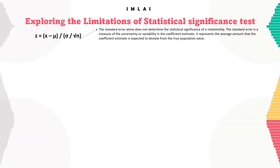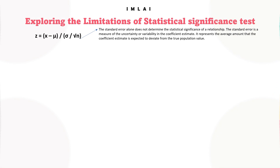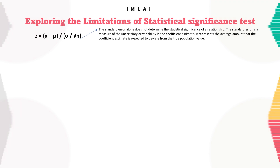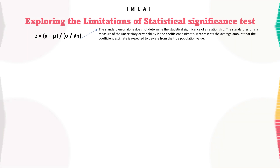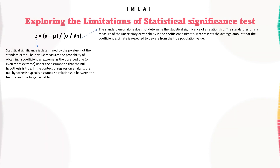The top portion is the deviation: sample mean minus hypothesized population mean, divided by the standard error, which is calculated as sigma divided by the square root of n. The standard error alone does not determine statistical significance — it is a measure of the uncertainty or variability in the coefficient estimate, representing how much the estimate is expected to deviate from the true population value.